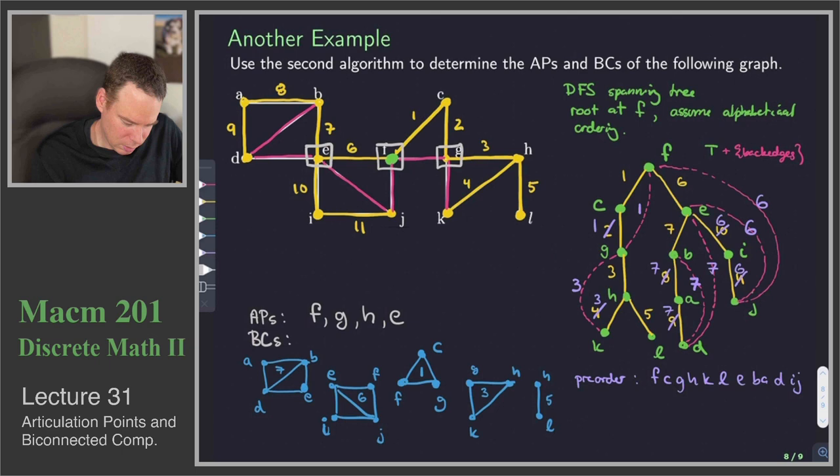Those are probably things that we could have seen almost immediately when we look at the graph. By inspection, we can probably pick these things out. We could probably find the biconnected components as well, because the graph is small.